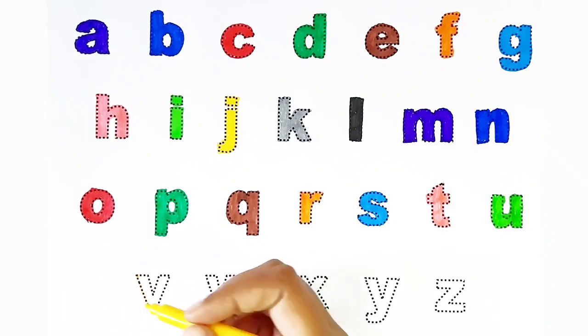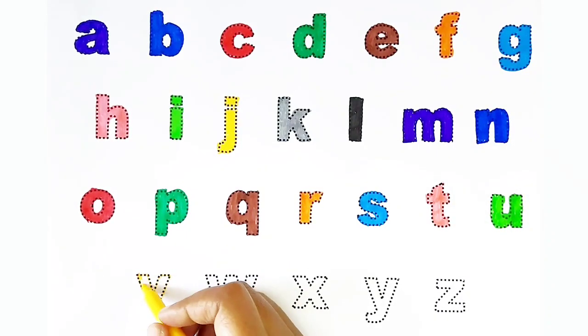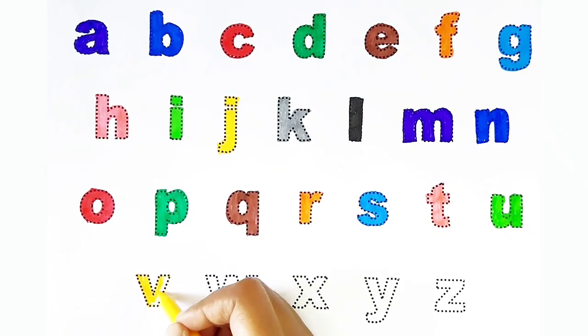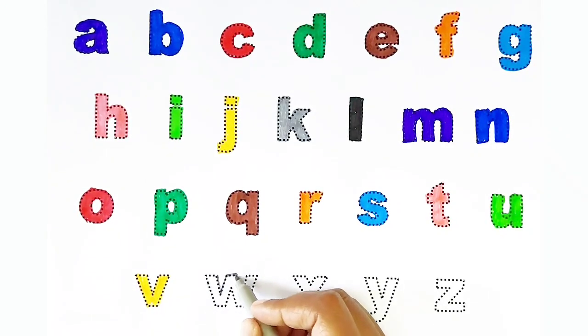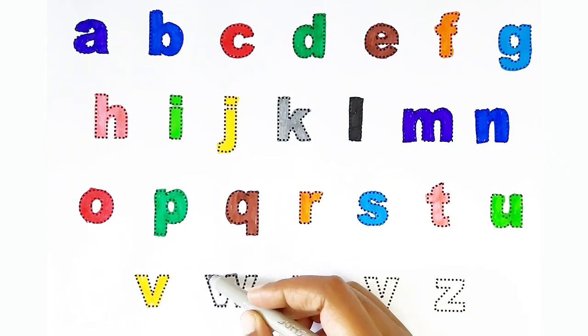V. Yellow color. V is for van. W. Grey color. W is for watermelon.